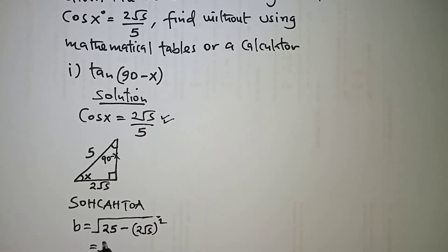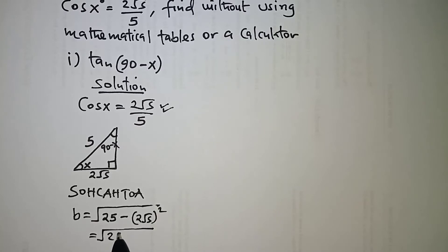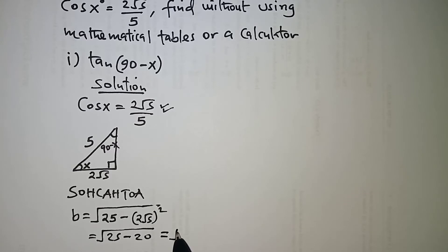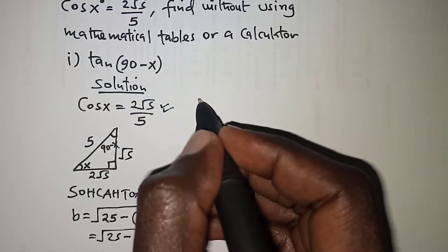So we need to get 25 minus 20. Remember here we are squaring 2 and we are squaring root 5. 2 squared is 4, root 5 squared is 5. So 4 by 5 gives us 20. So that should give us the square root of 5. So we can label this part root 5.